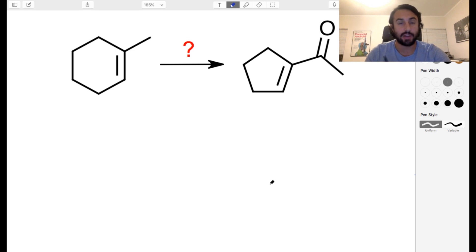Hey everyone, so I've got another synthesis challenge for you here. We've got a six-membered ring substrate and then we've got this five-membered ring with the ketone as our product, and we want to know what are we going to do, what kind of reaction conditions are we going to employ to get from reactants to product.